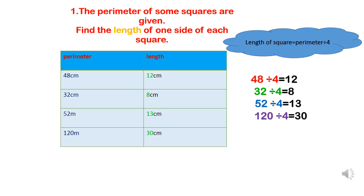Here, the perimeters of some squares are given and we have to find the length of one side of each square. Recall that the perimeter of a square is made up of four sides of equal length. The data given is: 48 centimeters, 32 centimeters, 52 meters, and 120 meters. To calculate the length, we use the formula: length of square equals perimeter divided by 4. Let's put the values of perimeter and divide by 4 to get the length of one side of each square.